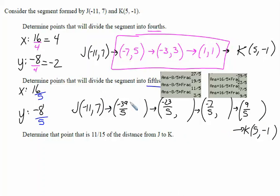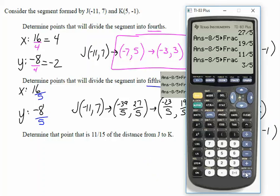The y values on our ordered pairs are 27 fifths, 19 fifths, 11 fifths, and 3 fifths. Now we need to be sure that when we subtract 8 fifths again, we get negative 1. Let's go to the calculator. Answer minus 8 fifths, hit enter. And there it is. It polishes off at negative 1.